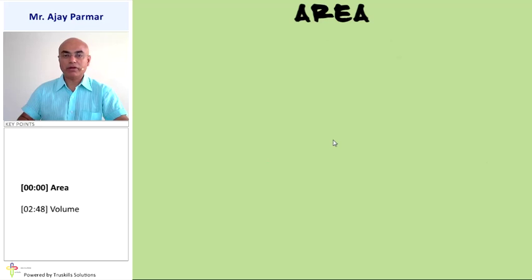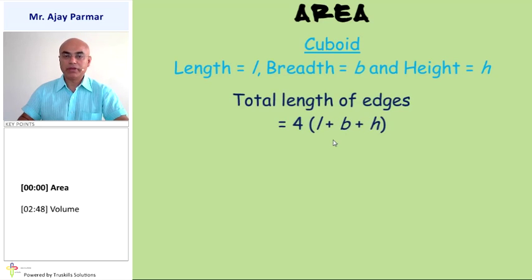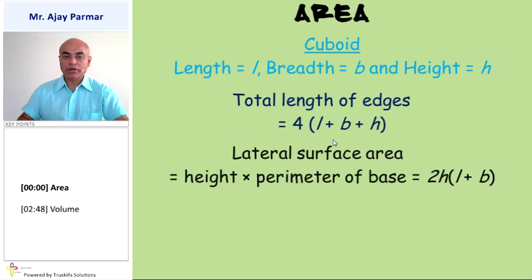One by one, all the shapes - that is cuboid, where the length, breadth and height are represented by L, B and H. Then the total length of all the edges will be 4 into L plus B plus H. Also, the lateral surface area will be equal to height into perimeter of the base, that is 2H into bracket L plus B.